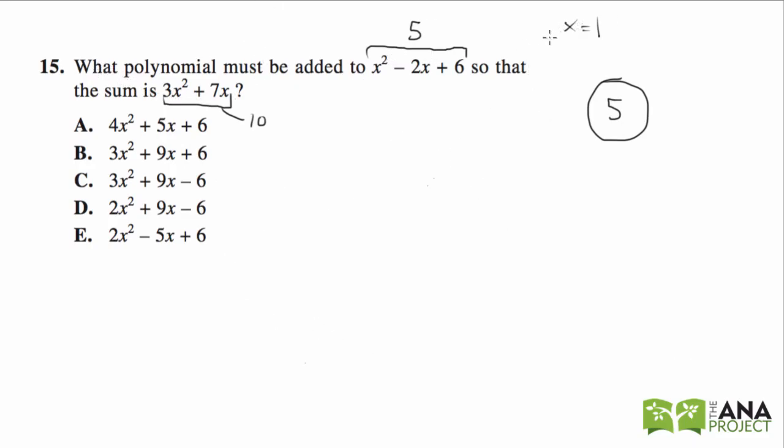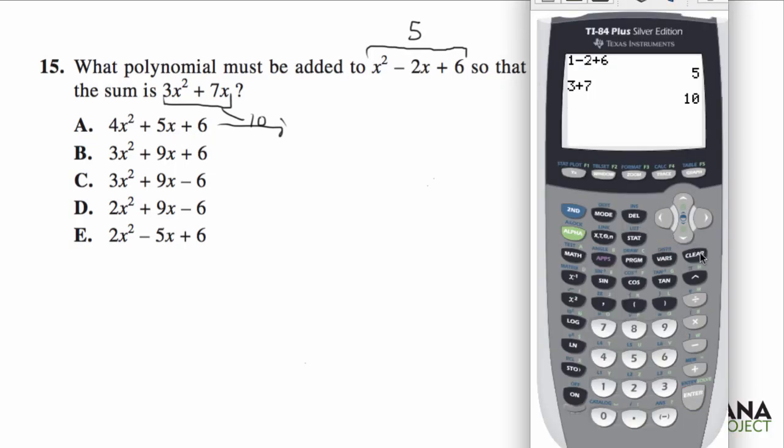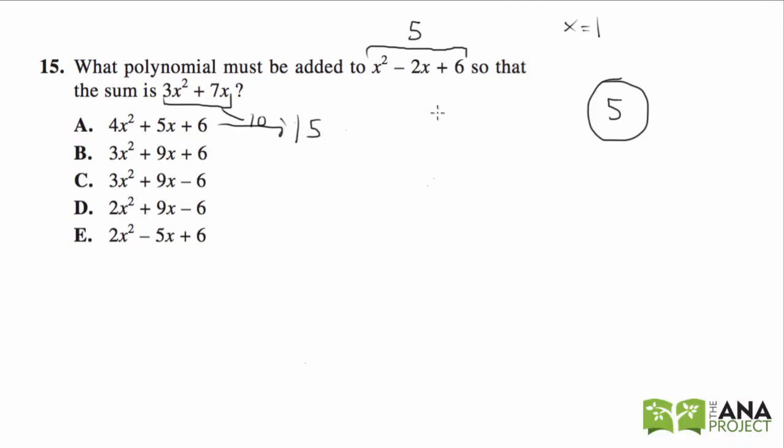So I'm going to go through all the answer choices. This would be 4 times 1 plus 5 plus 6. I'm going to use my calculator because I'm not the best at arithmetic. 4 times 1 squared is 4, plus 5 times 1 is 5, plus 6 equals 15. Well, we're trying to get 5, so that's gone.